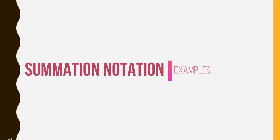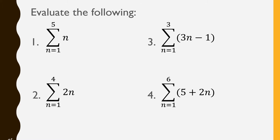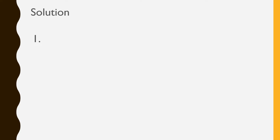Examples using and evaluating summation notations. Suppose we have these 4 items. The first item is the sum of n as n goes from 1 up to 5. The second item is the sum of 2n as n goes from 1 up to 4. The third one is the sum of 3n minus 1 as n goes from 1 up to 3. And the fourth one is the sum of 5 plus 2n as n goes from 1 up to 6. Now let us deal with the first item: the sum of n as n goes from 1 up to 5. This expression means the sum of all values of n starting from 1 and ending with 5.